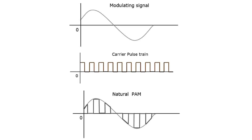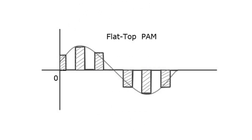The following diagram explains pulse amplitude modulation. Though the pulse amplitude modulated signal is passed through a low-pass filter, it cannot recover the signal without distortion. Hence, to avoid this noise, flat-top sampling is used. The flat-top pulse amplitude modulated signal is shown in the following figure. Flat-top sampling is the process in which the sampled signal is represented in pulses for which the amplitude cannot be changed with respect to the analog signal being sampled — the tops of amplitude remain flat. This process simplifies the circuit design.